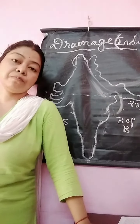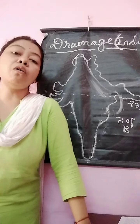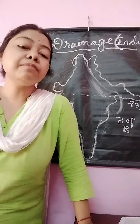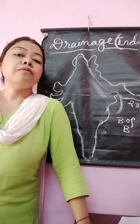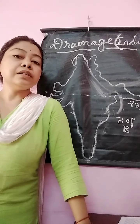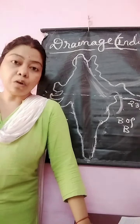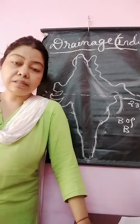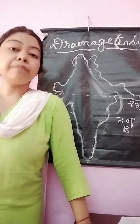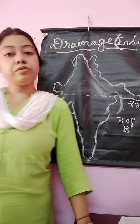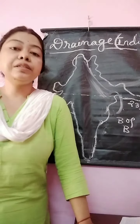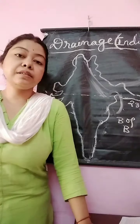Now we are going to the seasons of India. There are four main seasons in our country: the hot season or summer season, the cold season or winter season, the rainy season or monsoon season, and the retreating monsoon, which means the autumn season.